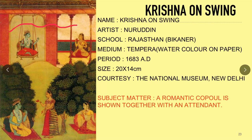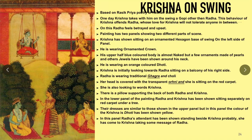Subject Matter: A romantic couple is shown together with an attendant. Compositional Arrangement: This miniature painting by Nuruddin is based on the Rasik Priya poetry of Keshav Dasa, the most widely illustrated work of medieval Hindu poetry.